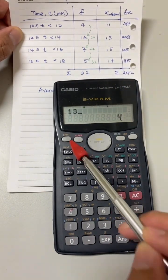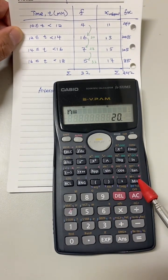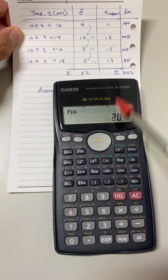Then, press 13, which is the x value. Shift comma, and then 16, M plus. N plus is 20 now because 4 plus 16 is 20.